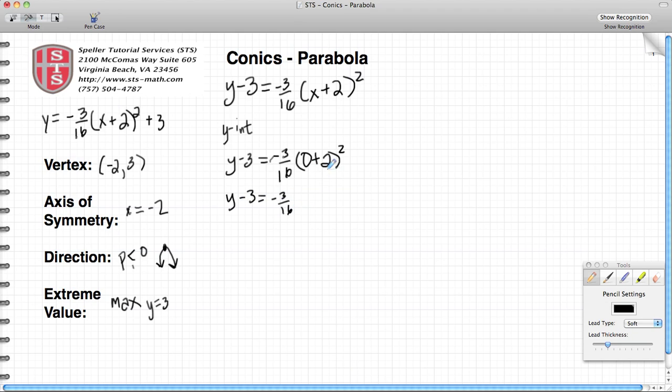Using the order of operations, I need to evaluate the 0 plus 2 in parentheses to get 2, and again continue with the rest, which is the squaring. Now I take the 2 raised to the second power, that gives me 4.